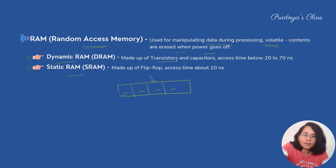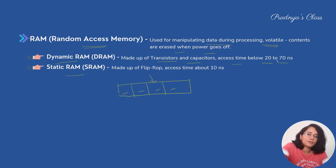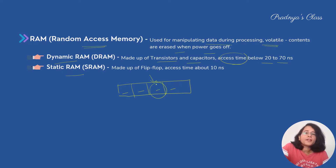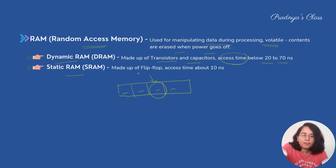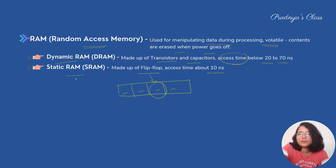Dynamic RAM is made of transistors and capacitors and has an access time of 20 to 70 nanoseconds. Access time is the time taken to access elements of memory from a particular location. The second type is Static RAM — it is made up of flip-flops and has an access time of 10 nanoseconds, which is lower than Dynamic RAM. So Static RAM is faster than Dynamic RAM.